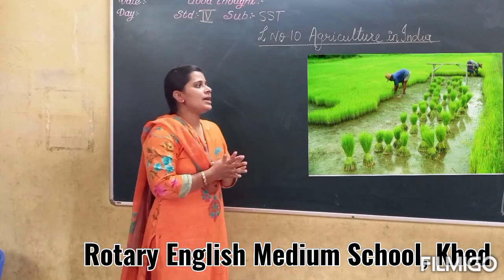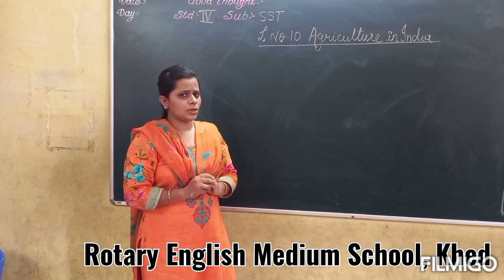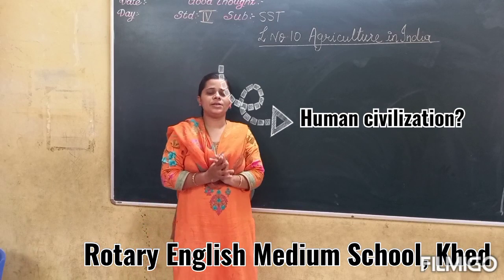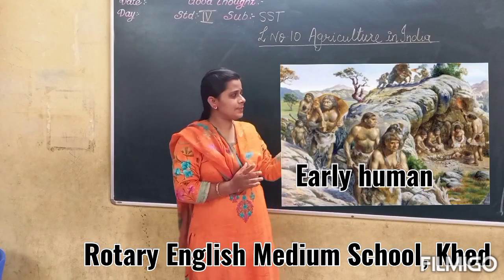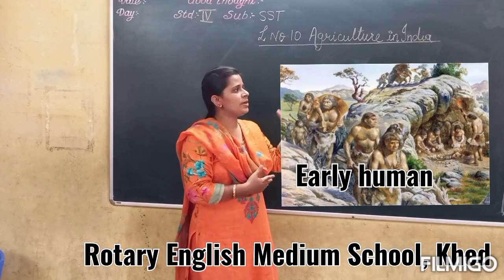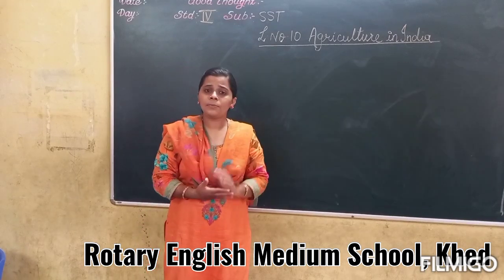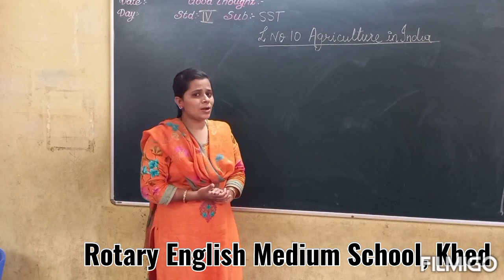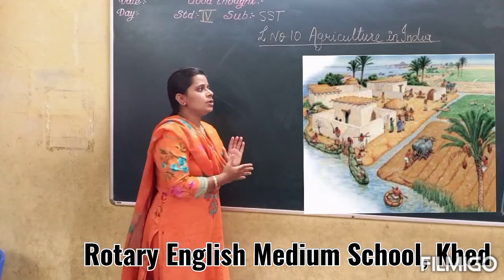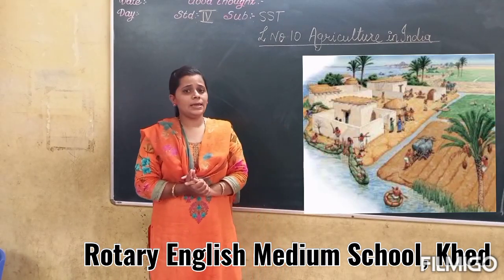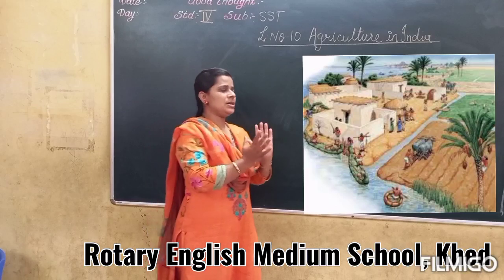Agriculture has played an important role in the development of human civilization. Let's take the example of early humans. They used to wander in the forest in search of food. But when these early humans came to know about growing crops, they settled near the riverbank, settled in one place, and started doing agriculture — growing crops. In this way, they settled and formed a society. That is human civilization.